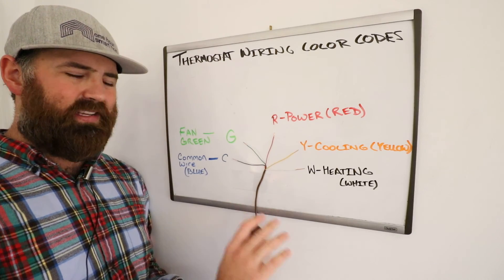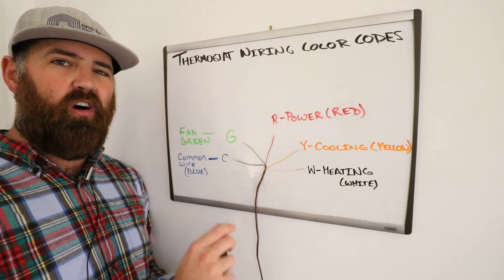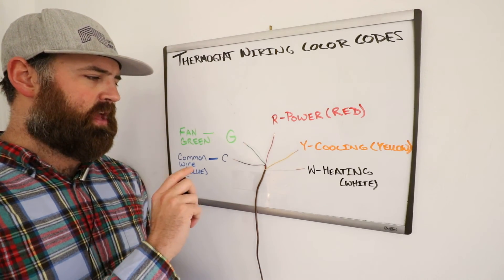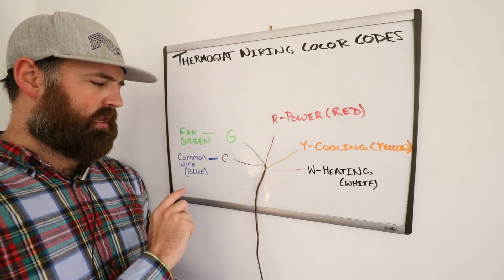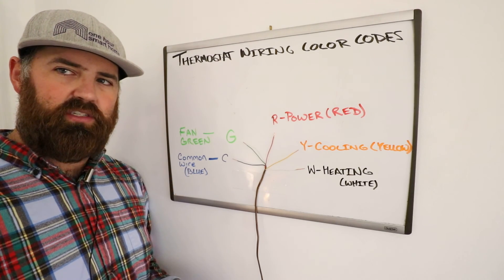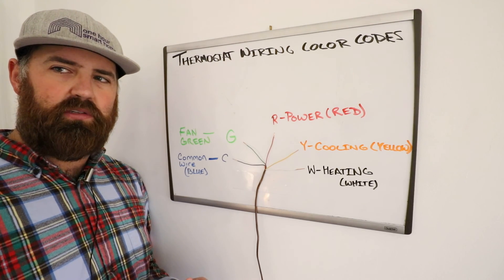White or W is heating. Y or yellow is cooling. R and power is red. G for fan is green. C is typically blue. And that is the common wire. So, we hope you enjoyed this video. Please like and subscribe and we will see you next time.